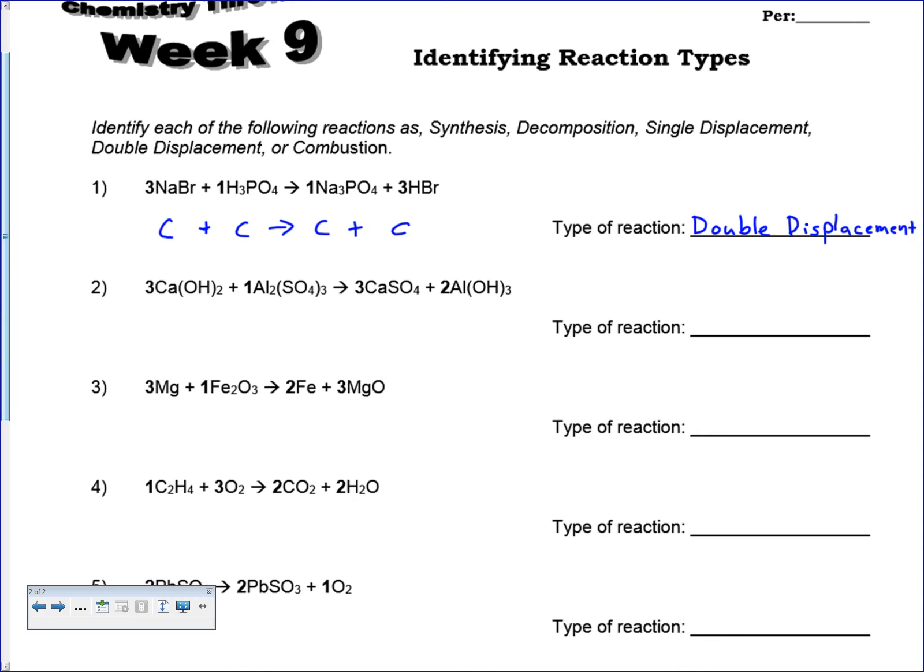On to the next one. This first thing here is a compound plus a compound. It yields a compound plus a compound. This is actually the same exact thing that we just had above. So the second one is also double displacement.